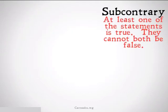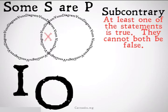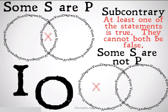Subcontrary is the relationship when two statements cannot both be false. At least one of a pair of statements has to be true. This relationship exists in categorical logic between the I and the O statement for Aristotle. That's some S are P and some S are not P.